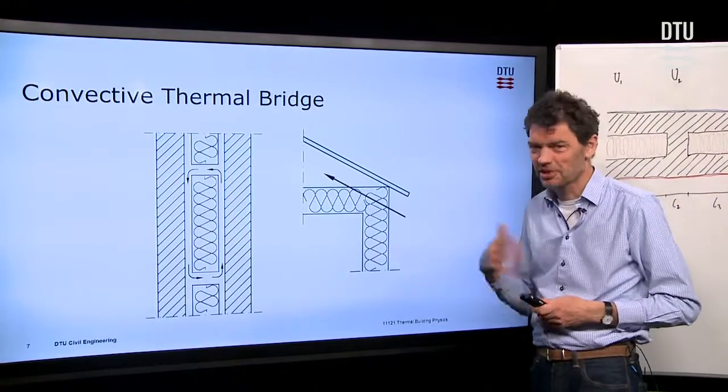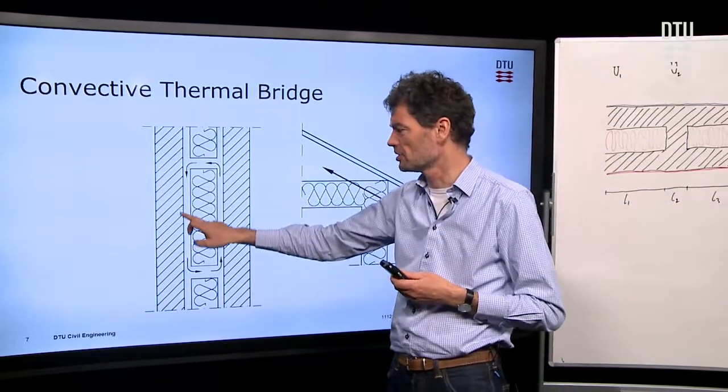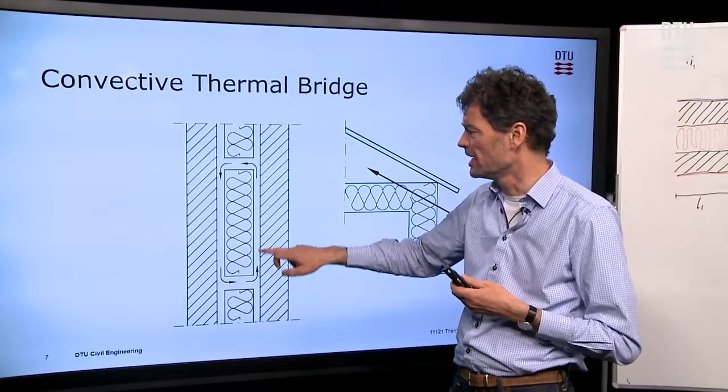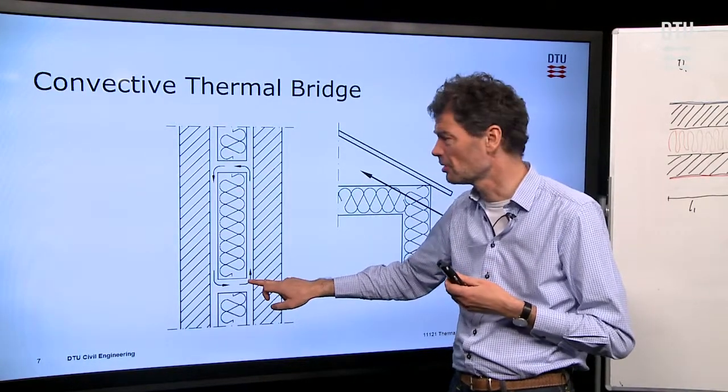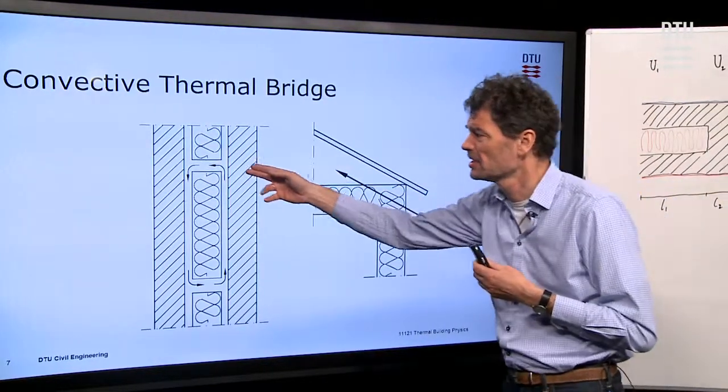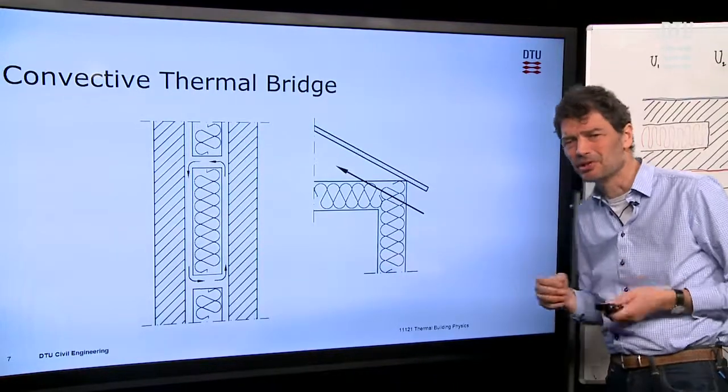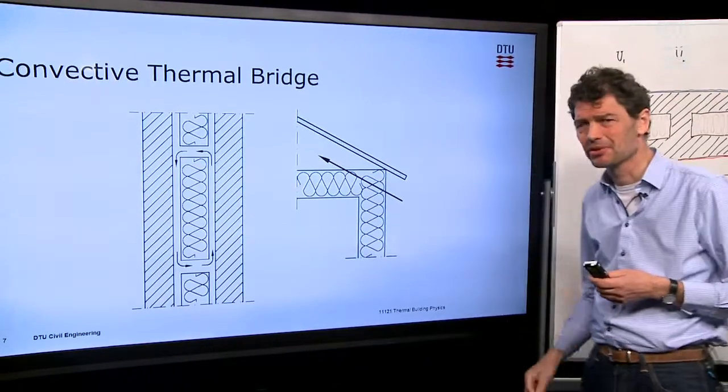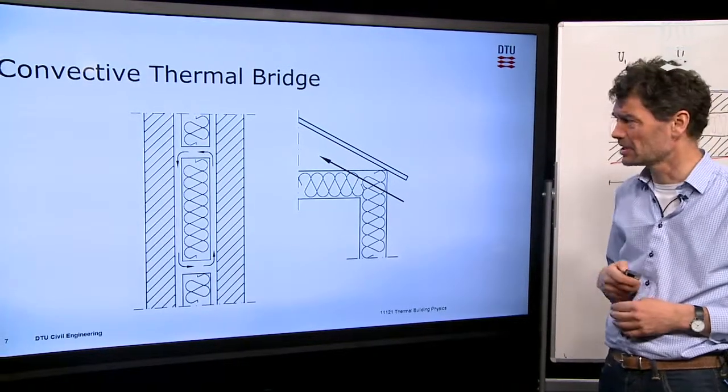The last type of thermal bridge that we also sometimes see is a convective thermal bridge. If there's some possibility for air to somehow pass around the insulation batts in a wall, then the air would be heated up. It would bring the heat to the front where it's cooled down, and then led back cold. So that leads to an extra thermal transmission, which kind of looks like a thermal bridge. It could also be air that passes through some other elements of the structure.